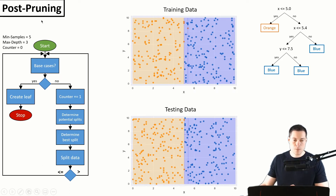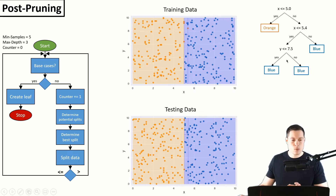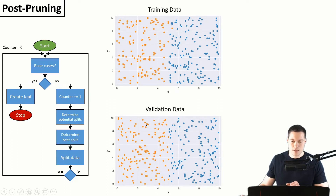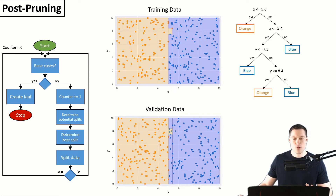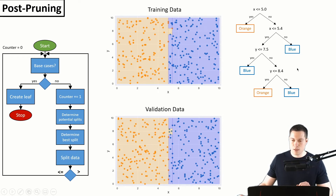The other type is called post-pruning. In contrast to pre-pruning, we let the tree grow deep and only then prune it back. For this we need a training dataset and a validation dataset. We apply the algorithm to the training data to create our decision tree without worrying about depth — no pre-pruning. As a side note, we could combine both pre-pruning and post-pruning, but in this simple case that's not necessary. Now that we have this overfitting tree with too many layers, we can start pruning.